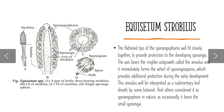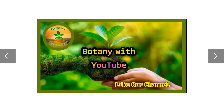You can see in the diagram the structure of the strobilus: an annulus ring is present, spores, sporangia, the axis of the strobilus, and sporangiophores.